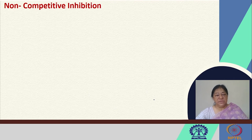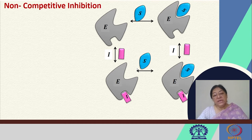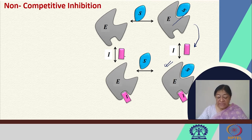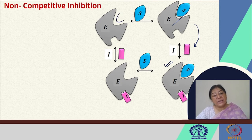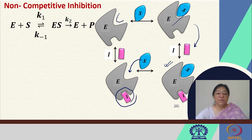In non-competitive inhibition, the enzyme-substrate complex is formed and the enzyme-inhibitor complex may also be formed. In this case, there is formation of a ternary complex — if the enzyme-substrate is bound and the inhibitor then binds, we have a complex with both substrate and inhibitor bound. The inhibitor does not bind to the active site of the enzyme; rather, it binds to its own separate site in non-competitive inhibition. Once this ternary complex is formed, it can no longer form the product.